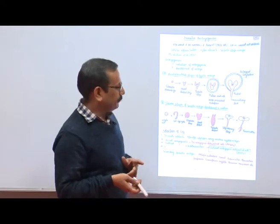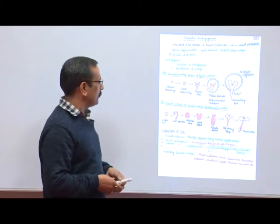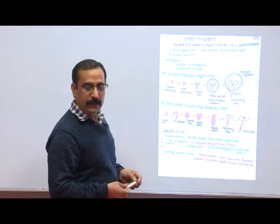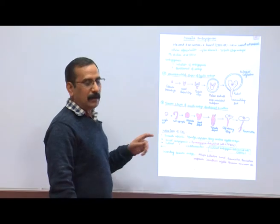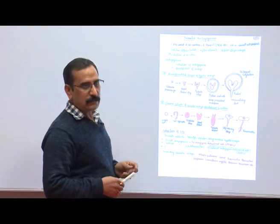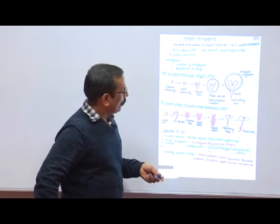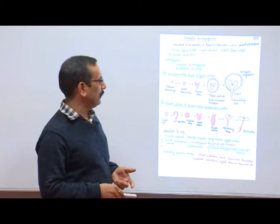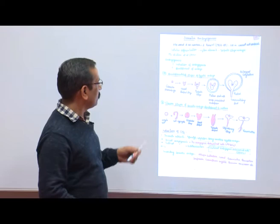For the induction of somatic embryogenesis, in in vitro development the first step is selection of explant. The explant is a piece of tissue or organ used to develop cultures. We can use hypocotyl, cotyledon, immature zygotic embryo, leaf, petal, sepal — any living cells can be used for the initiation of culture in in vitro conditions.